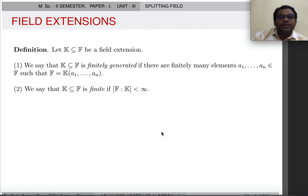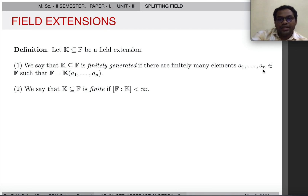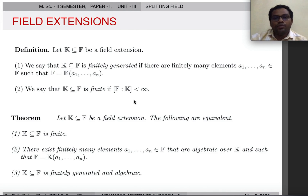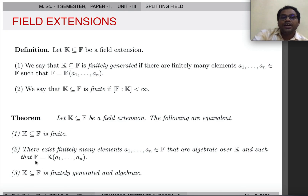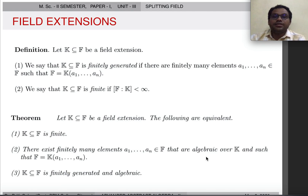F is called finitely generated if there are finitely many elements A1, A2, ..., An such that F can be obtained by adjoining A1 through An to base field K. F is called finite if the degree of F over K is finite. You have already seen and proved this theorem: if F is an extension field of K, then the following three are equivalent — F is finite; there exist finitely many algebraic elements A1, ..., An in F such that F = K(A1, ..., An); and F is finitely generated and algebraic.